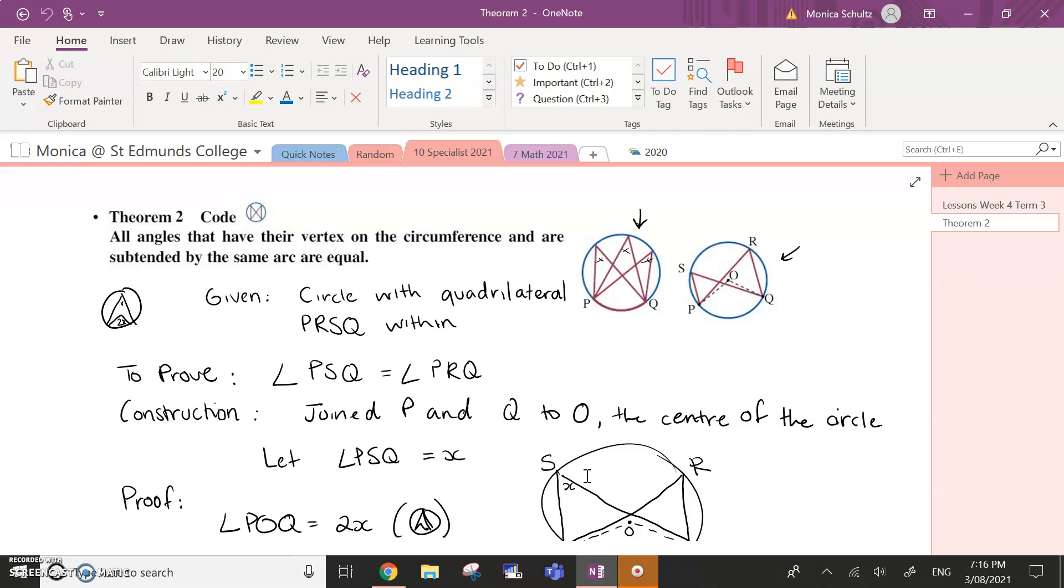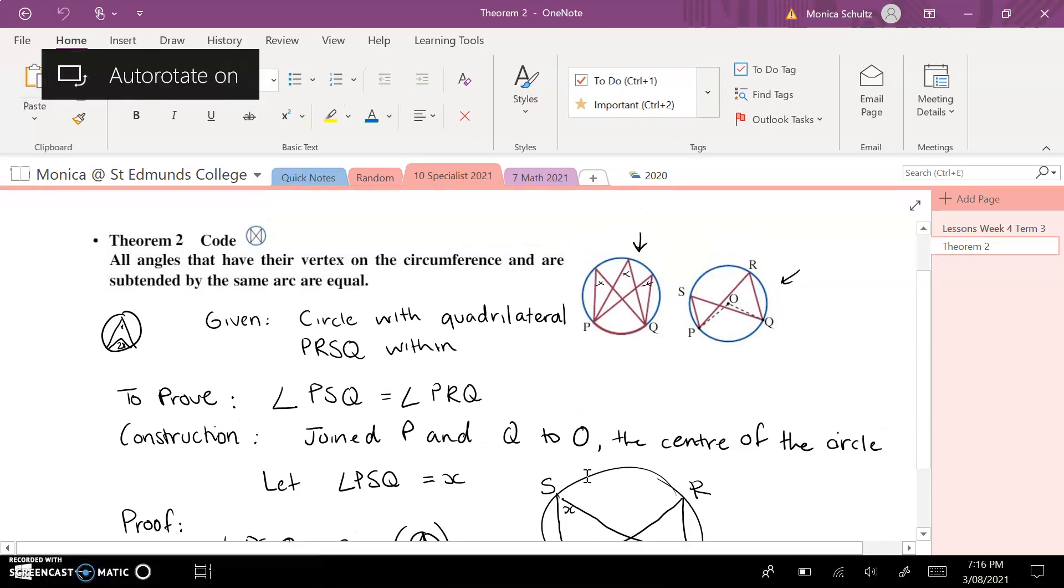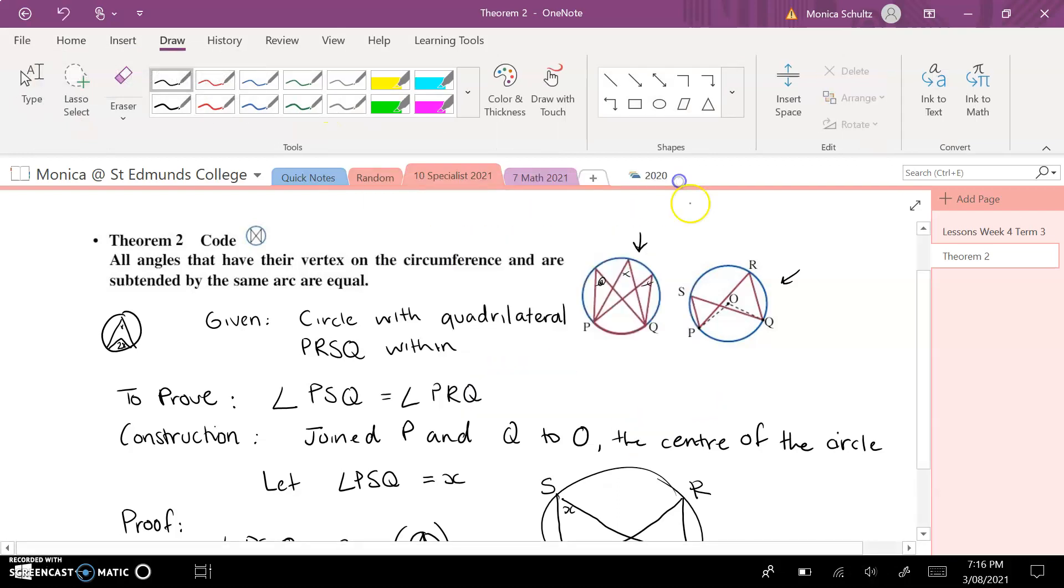So Theorem 2 is about all angles that have their vertex on the circumference and are subtended by the same arc. So what that refers to, and I'll just grab my pen out so that I can indicate it, is this angle here, this angle here and this angle here are all equal because they're all connected to the same arc of PQ.